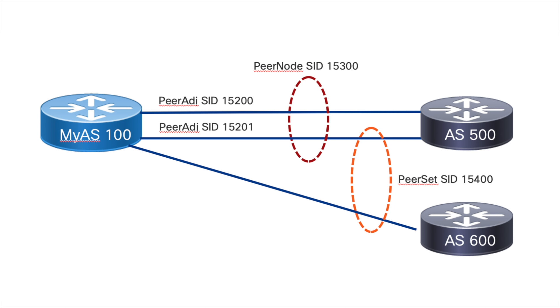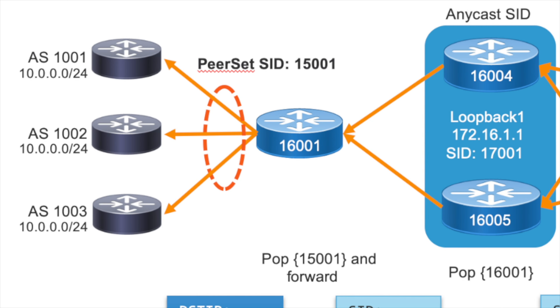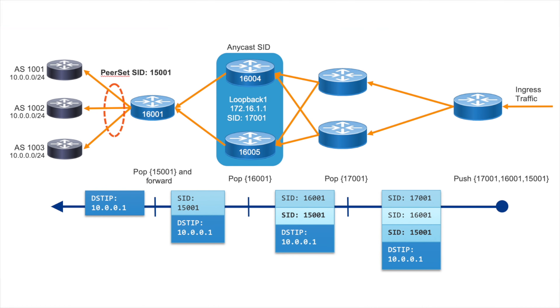The Peer Set SID is a new addition that allows you to combine adjacency SIDs and node SIDs into a set of links or nodes addressed with a single SID. It's a powerful way to balance traffic between multiple egress peers by addressing that single Peer Set SID in the SID list. For example, with three egress peers — 1001, 1002, 1003 — normally you'd take a single BGP path to one peer, but using SR and the Peer Set SID, a single SID as the last entry in the SID list can load-balance traffic across all three connections.